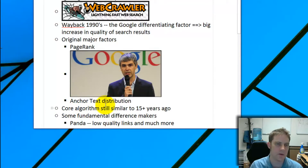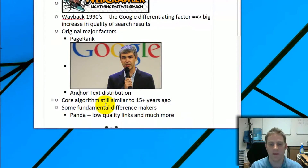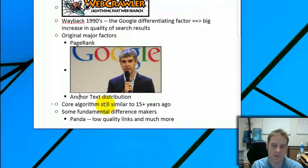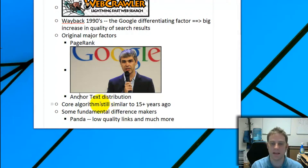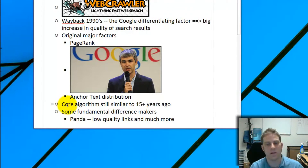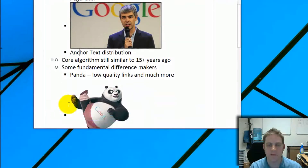People slowly figured out how to game anchor text, and Google had to respond by detecting unnatural anchor text distributions — that's what Panda and Penguin are about. Your anchor text distribution today is just as important, but it has to be different from what you'd have used to rank two to four years ago. The core algorithm is still the same — on-page and off-page — and social media added additional signals.